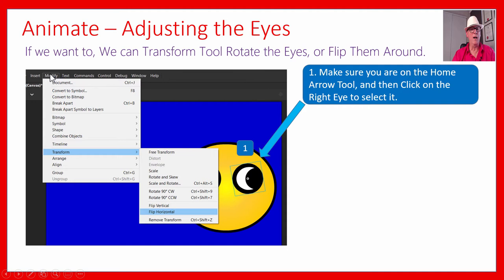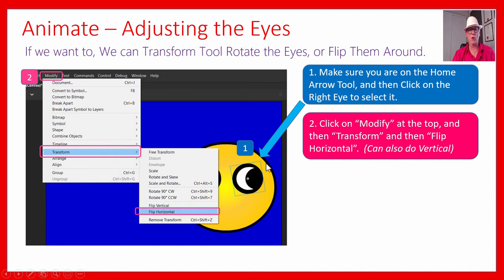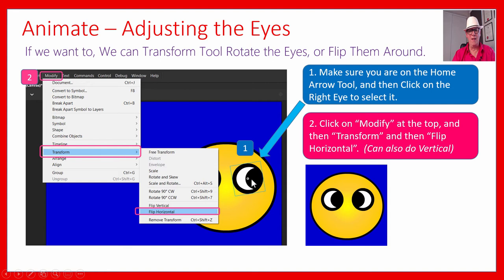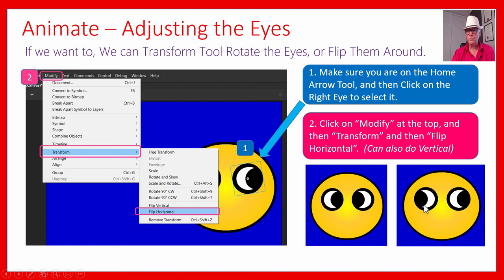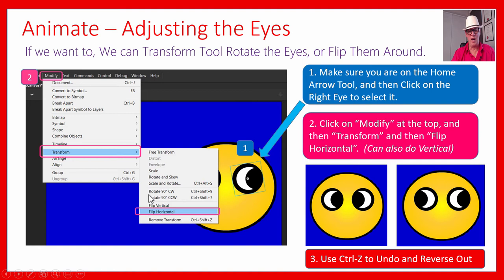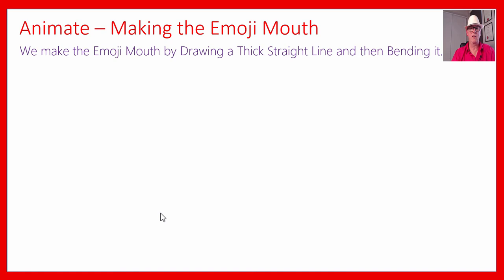If you want to flip things around, you can go Modify, then Transform, and Flip Horizontal. That will flip your eye around. You can also Flip Vertically. So it'll flip the eye the other way so it's staring in the other direction, giving you a cross-eyed emoji - which might be good if you want someone who's totally confused. You can flip them both the other way too and have an emoji that's really scared and looking both ways at once. Use CTRL+Z to go backwards to what you originally had. You can click on a shape and go Modify, Transform, and Flip Horizontal - so it's facing the other way. That's a handy thing to know.